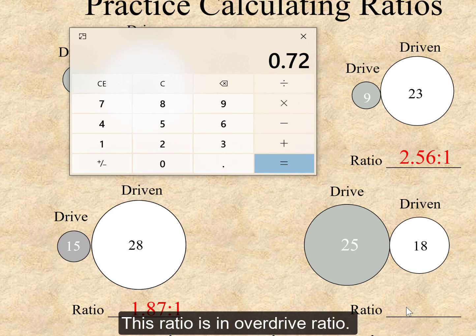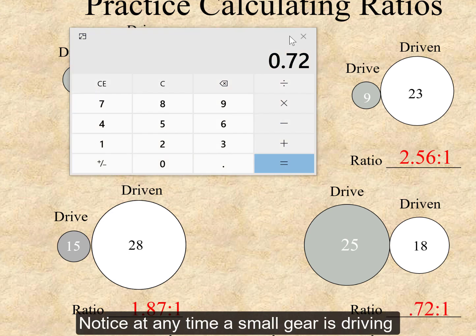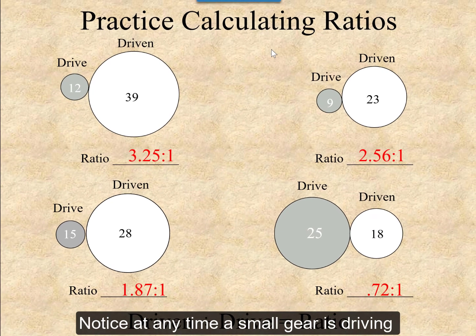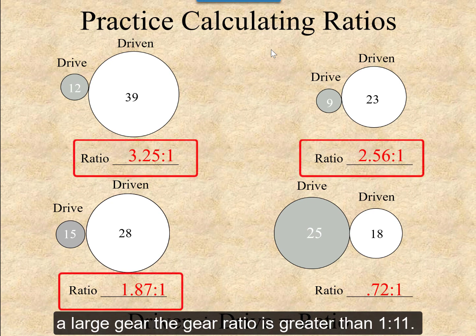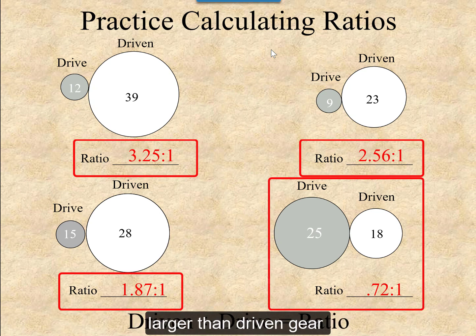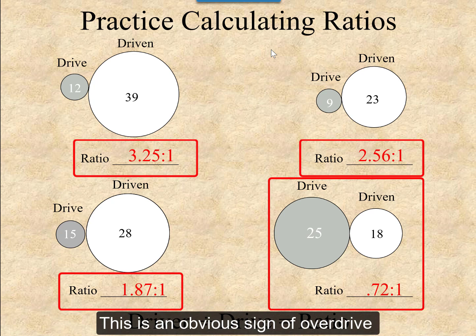This ratio is an overdrive ratio. Notice that any time a small gear is driving a large gear, the gear ratio is greater than 1 to 1. But when the drive gear is larger than the driven gear, the gear ratio is less than 1 to 1. This is an obvious sign of overdrive versus underdrive.